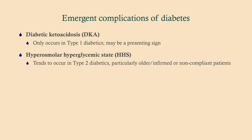There are two real big emergent complications of diabetes. Yes, you can get nephropathy, retinopathy, neuropathy, and all that stuff — but those are chronic complications that happen years, if not decades, down the road. When we talk about things that can show up all of a sudden, we're talking about two things: diabetic ketoacidosis, particularly in type 1 diabetics, and hyperosmolar hyperglycemic state — HHS — which tends to be in type 2 diabetics.